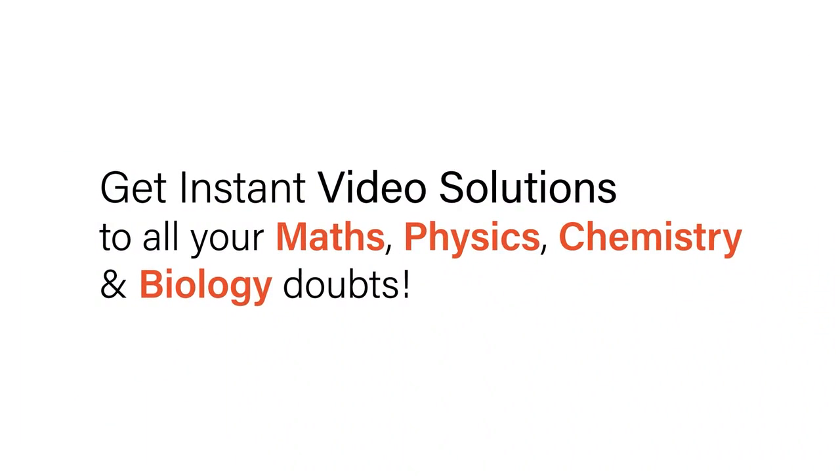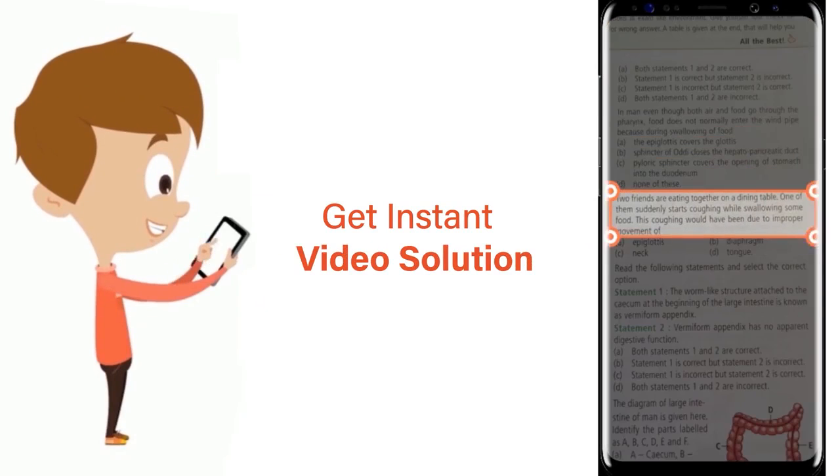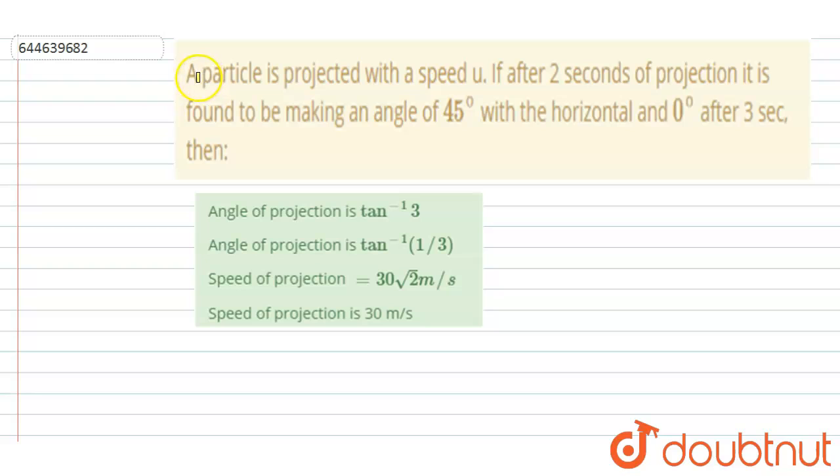With Doubtnet, get instant video solutions to all your maths, physics, chemistry, and biology doubts. Just click the image of the question, crop it, and get instant video solution. A particle is projected with speed u. After 2 seconds of projection, it is found to make an angle of 45 degrees with the horizontal, and 0 degrees after 3 seconds. Then you have to check out of a, b, c, d which option is the correct one.